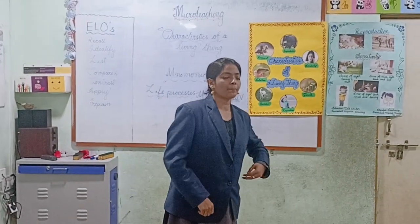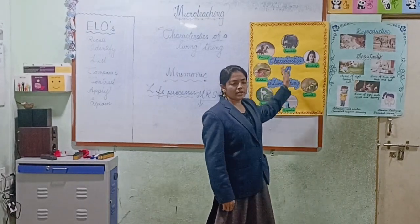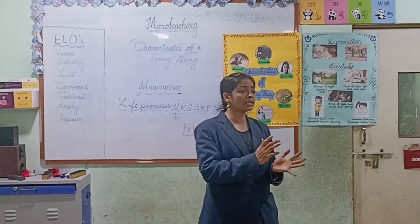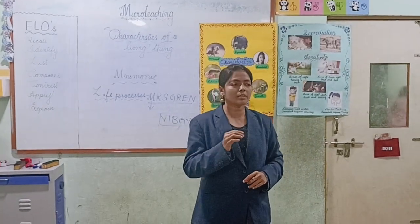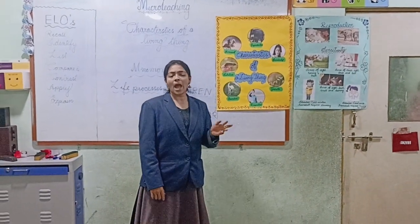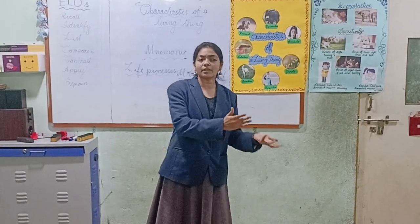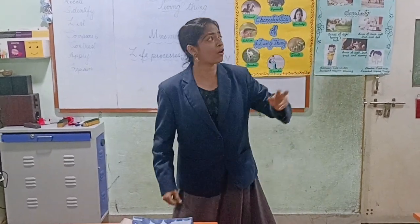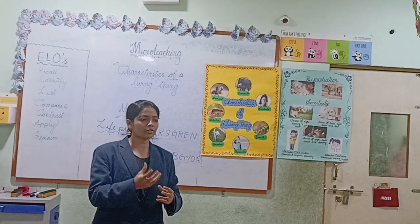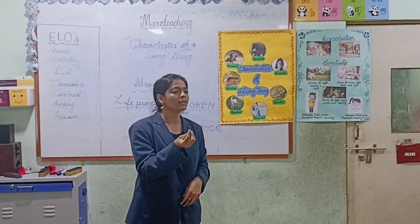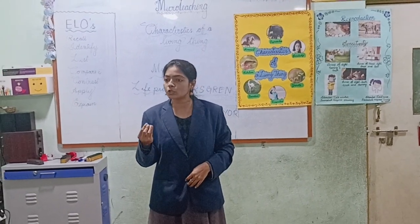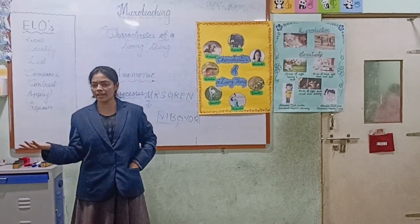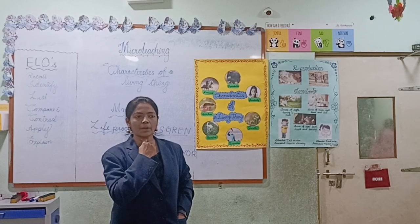Reproduction means the process by which living things produce new ones of their own kind. Animals usually reproduce either by laying eggs or by giving birth. For example, a hen lays eggs, and a cow gives birth to a calf. In higher grades, you will learn more about reproduction.